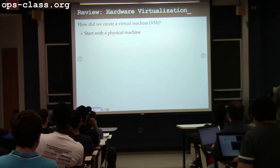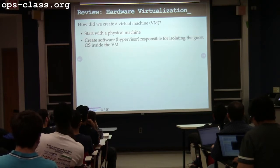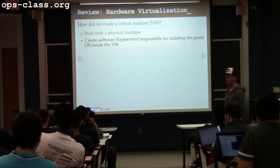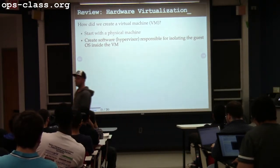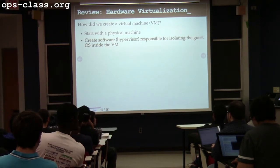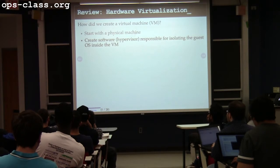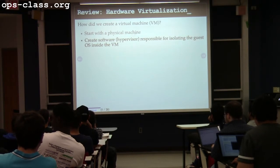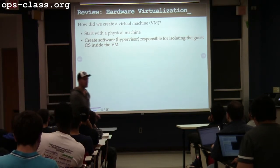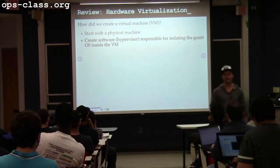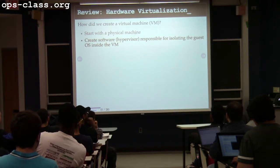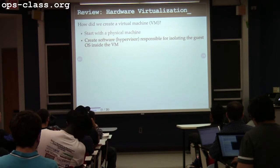I start with a physical machine — that's required. Then I write some software called a hypervisor. The hypervisor is responsible for taking resources from the actual underlying physical machine and using them to create virtual machines. I use the underlying resources to create one or potentially more virtual machines. And then I need to isolate the software that runs inside the virtual machine — the most difficult piece being the guest operating system, which is used to managing hardware resources in ways that could allow it to escape.